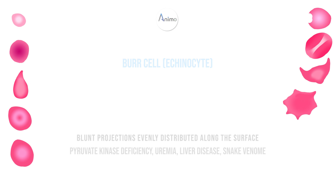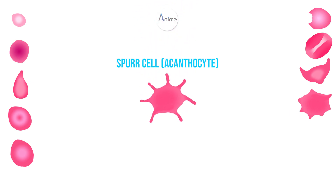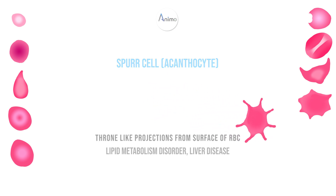The next RBC is something similar, which is spur cell, also called acanthocyte. In this RBC, there are thorn-like projections from the surface of the RBC. It is found in lipid metabolism disorders and liver disease.